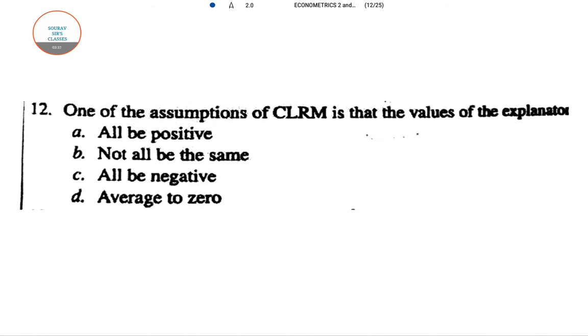Next is question number twelve. One of the assumptions of CLRM (Classical Linear Regression Model) is about the values of the explanatory variable. There is a problem here with the term 'explanatory variable'.